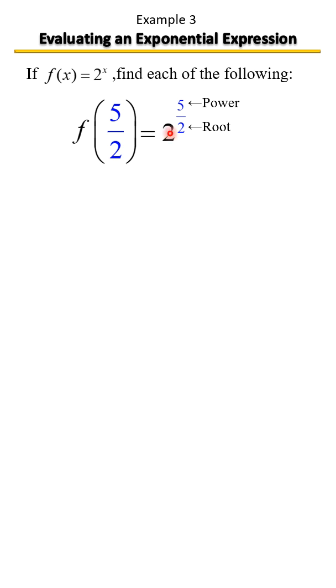So what you're going to have is the base always goes under the radical. Under the radical is a two, and you're going to raise it to the fifth power and then find the square root of it.